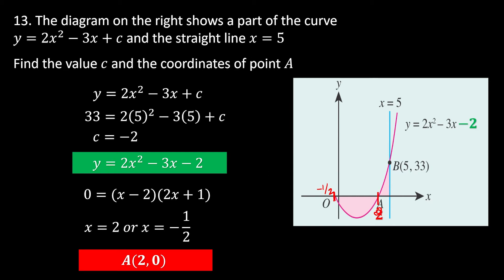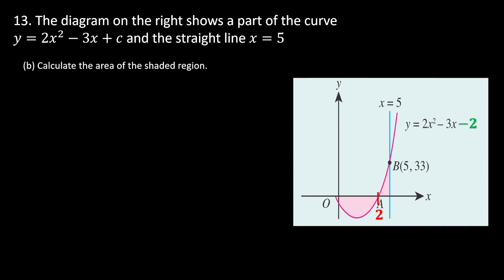Part b asks for the shaded region area. The shaded region is split into two parts because it is bounded by the x-axis. Below the x-axis gives negative values, above gives positive. The negative portions are larger, so without splitting, the result would be negative.